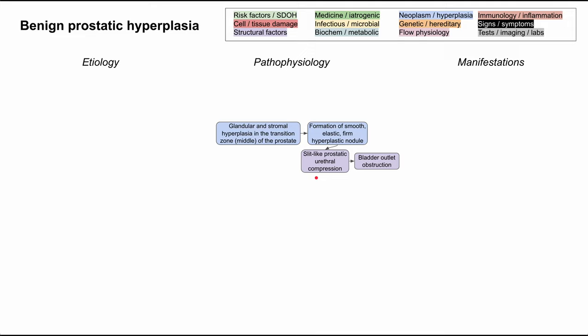The urethra goes through the gland itself and becomes a slit as it gets compressed, leading to bladder outlet obstruction. The location of prostatic growth in BPH is important to contrast with prostatic cancer, where growth occurs in the outer peripheral zone. So growth in the outer peripheral zone is concerning for prostate cancer, whereas growth in the middle transition zone is more likely to be benign prostatic hyperplasia.